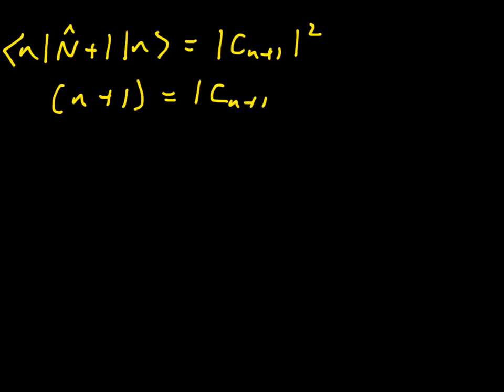So if we substitute there, then we see that we have bra N, N hat plus 1, ket N, and that's equal to the square modulus of C N plus 1. We can act with N hat, the number operator on N, and that tells us that N plus 1 must equal the square modulus of C N plus 1.